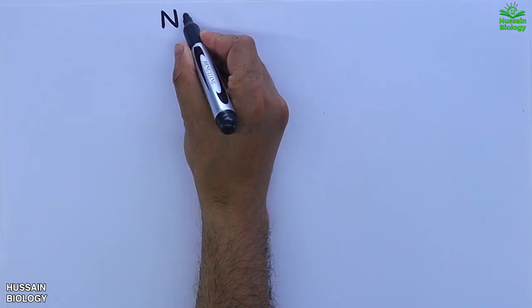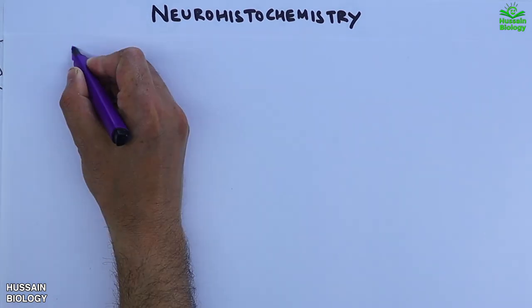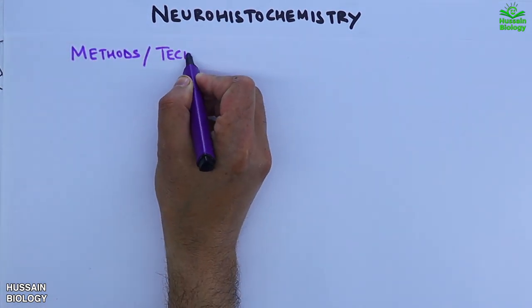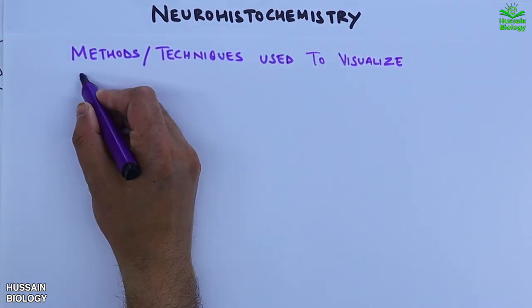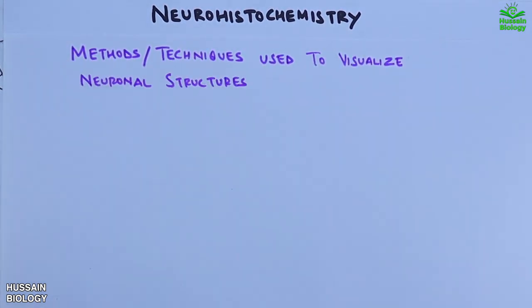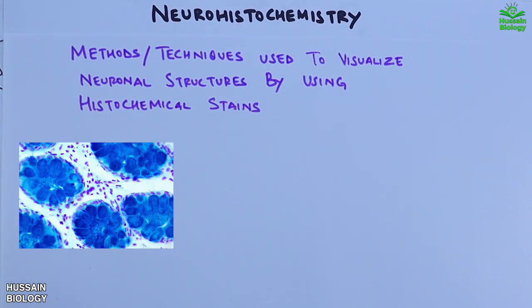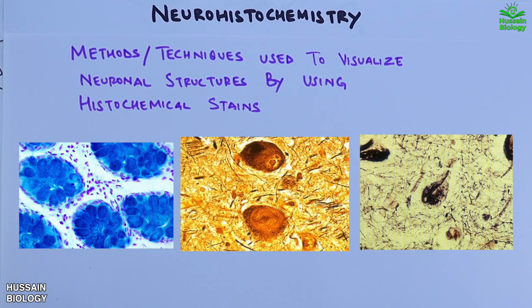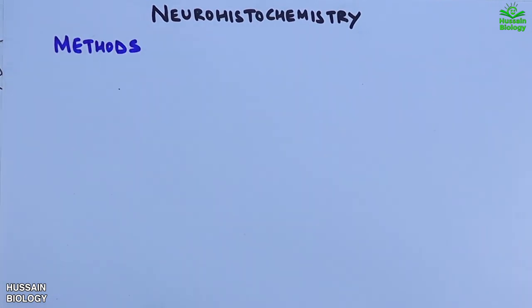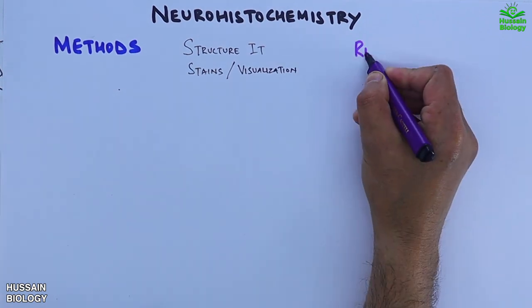In this video we'll be discussing neurohistochemistry, which involves the methods or techniques used to visualize neuronal structures by using histochemical stains like methylene blue, silver nitrate, gold sublimate, and more. On the left we'll have the methods, followed by the structures they stain or visualize, and then we'll see the type of reagent used for these methods.